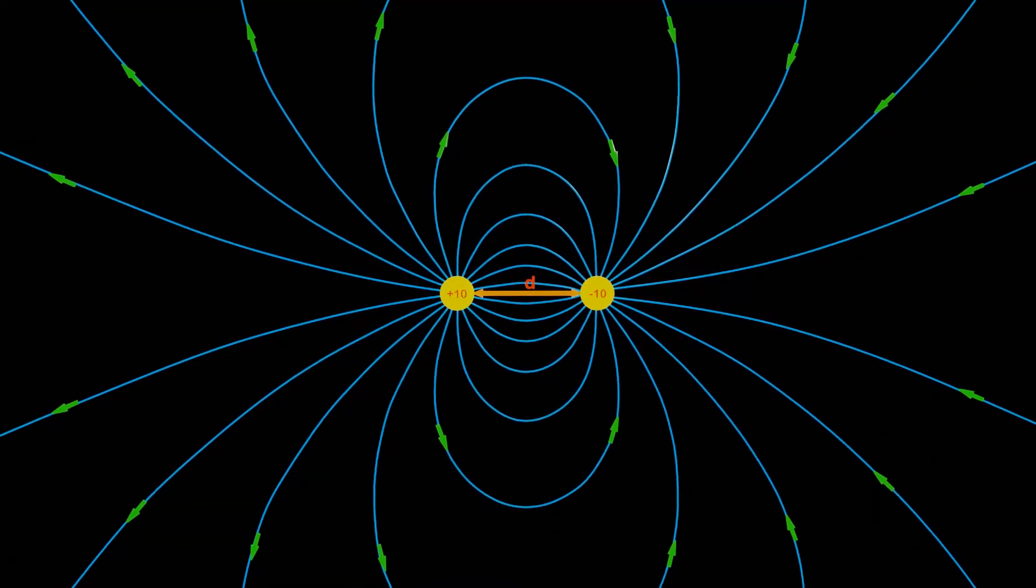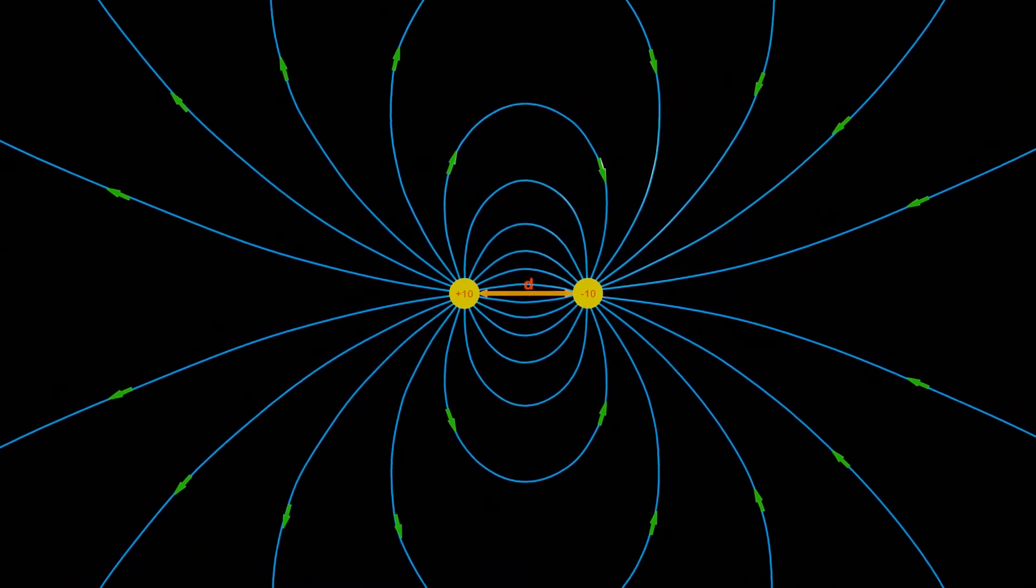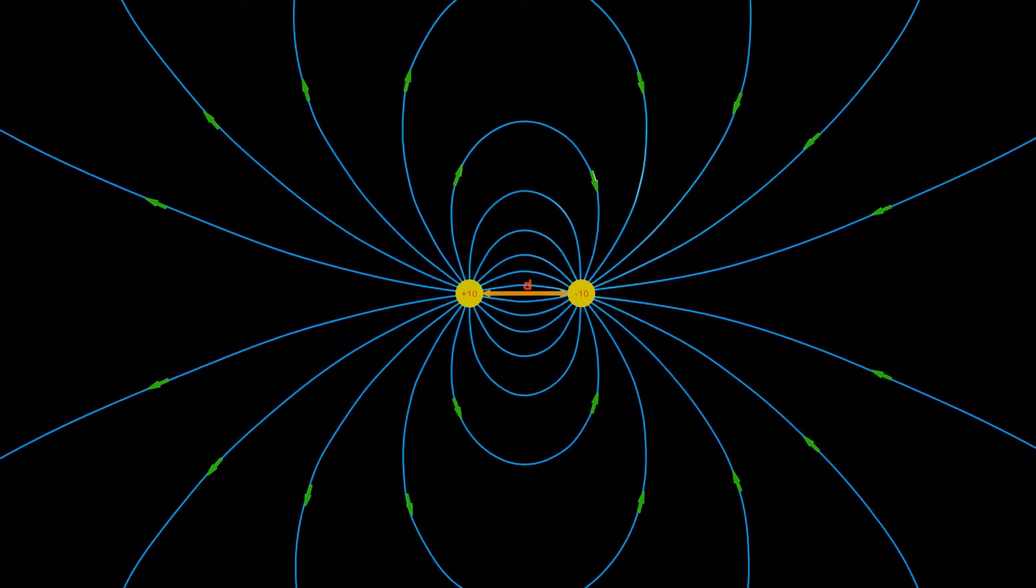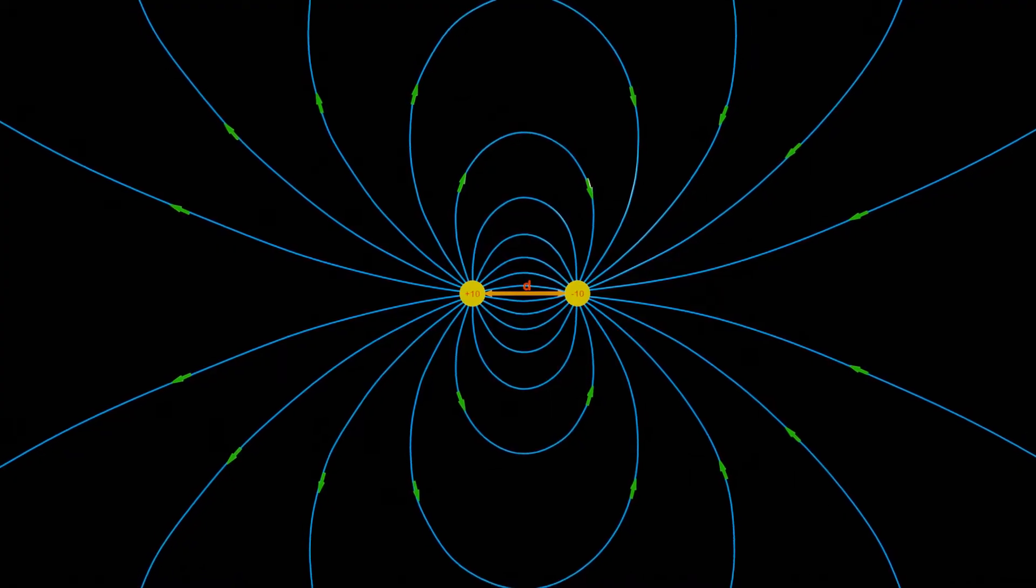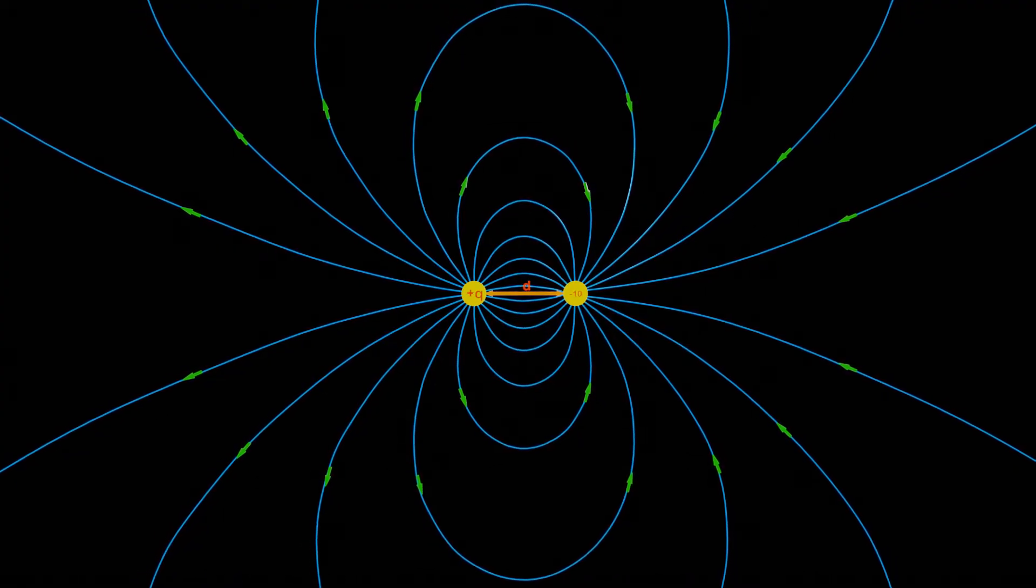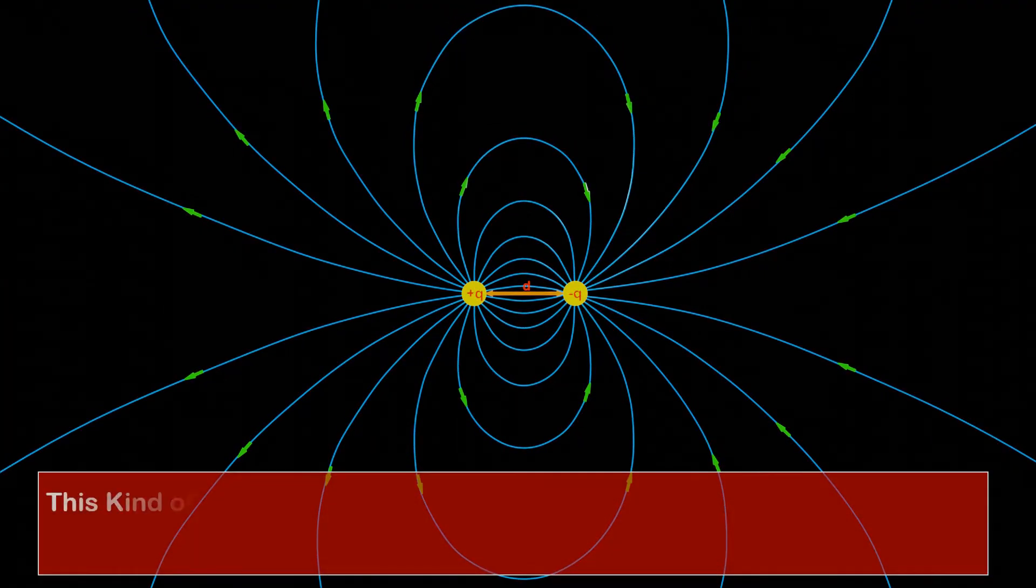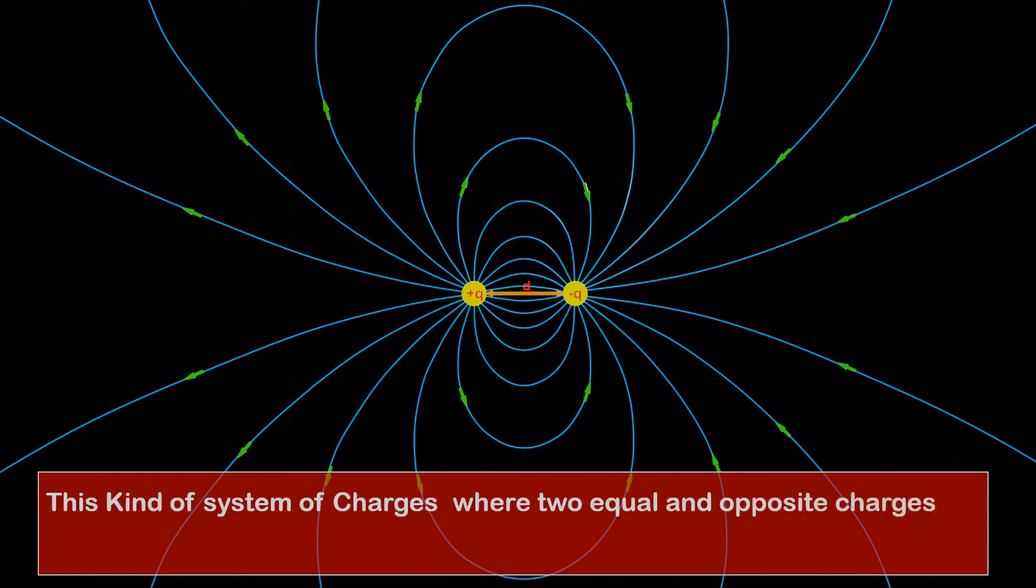And we can see that the electric field is not 0, but rather we observe a beautiful pattern of electric field lines due to two poles, positive and negative. This kind of system of charges, where two equal and opposite charges are attached to each other at a fixed distance, is called an electric dipole.